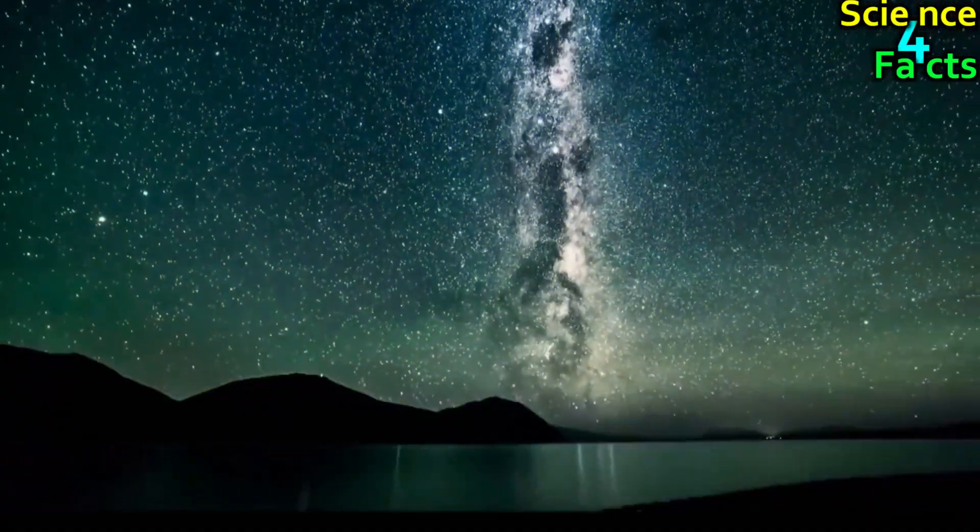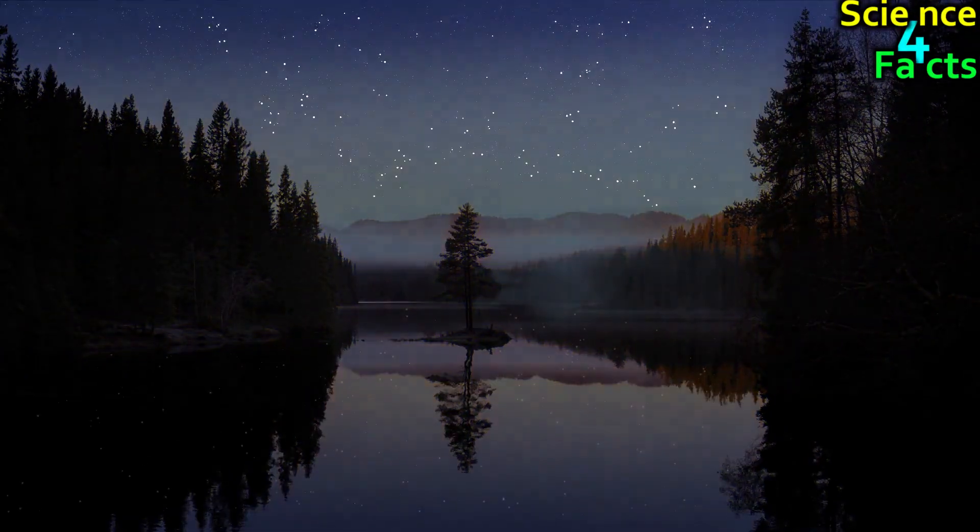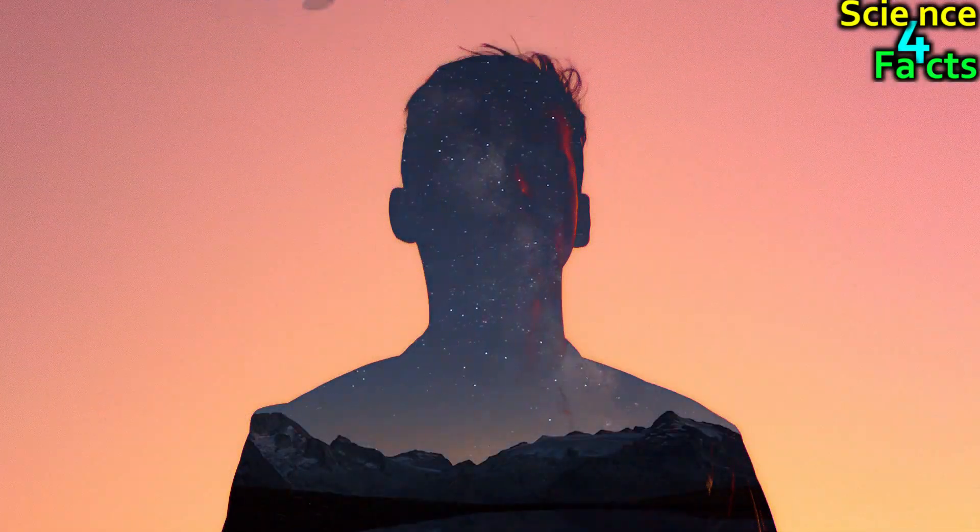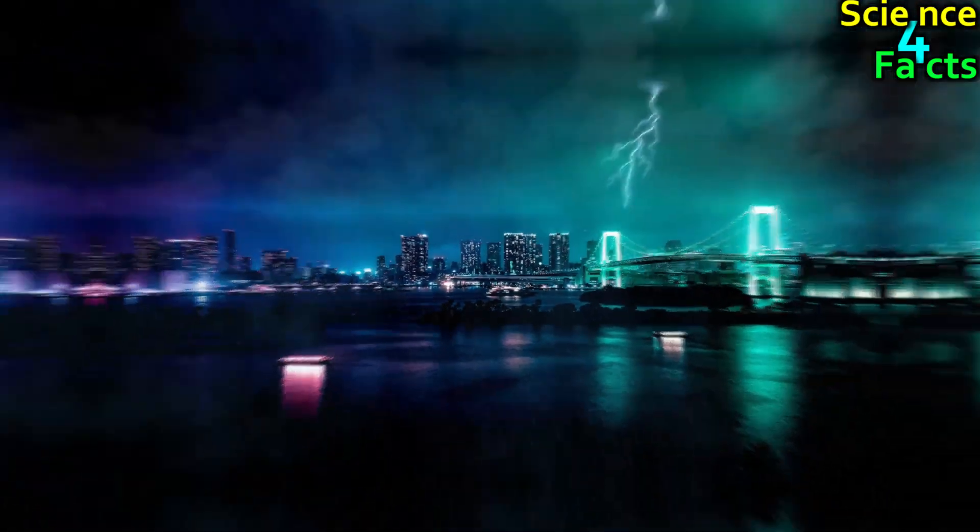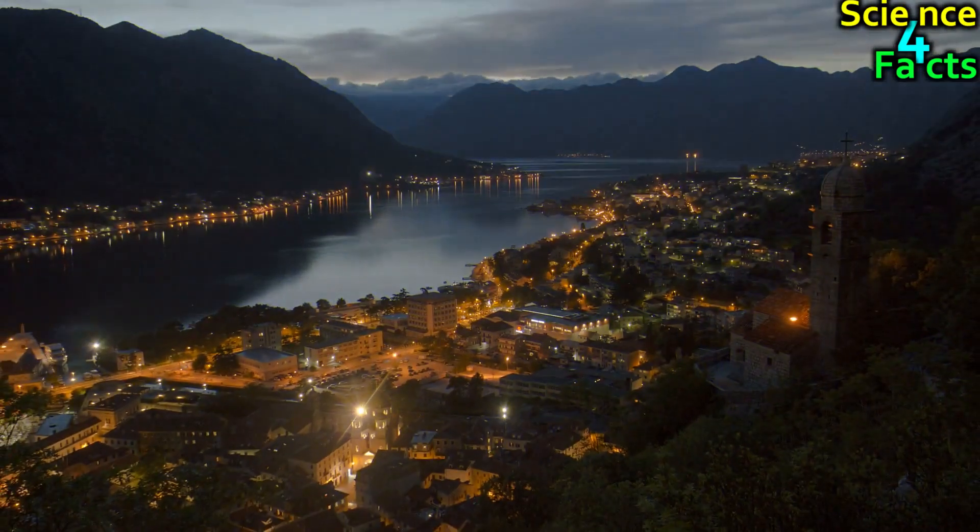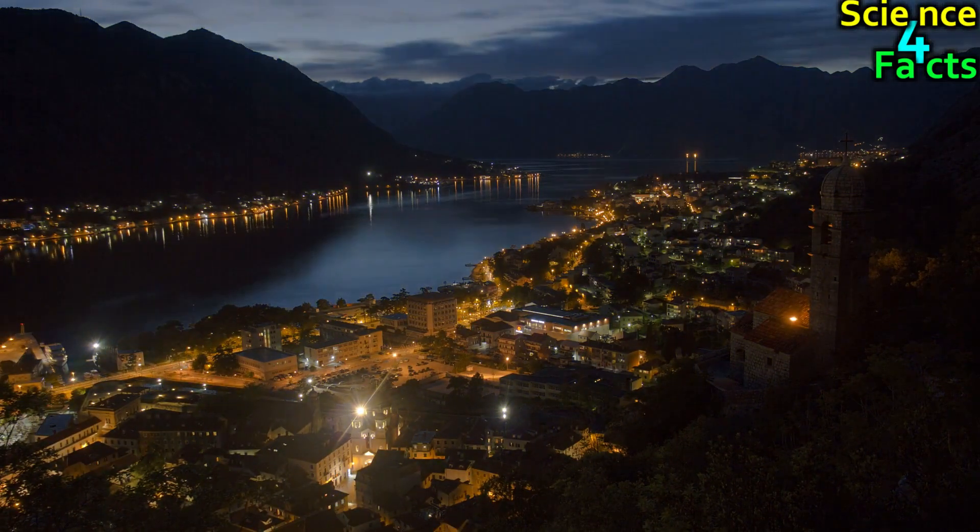The night sky appears dark despite the fact that there are trillions of stars in the universe. This may seem counterintuitive, since one might expect that with so many stars, the night sky would be brightly lit. However, this is not the case. There are several factors that contribute to the darkness of the night sky.